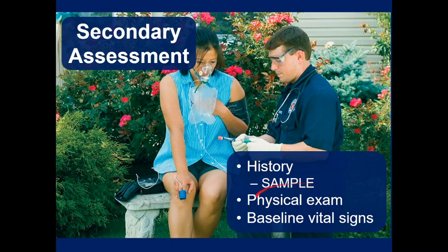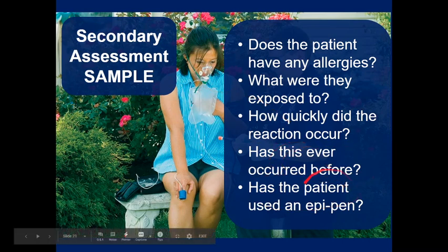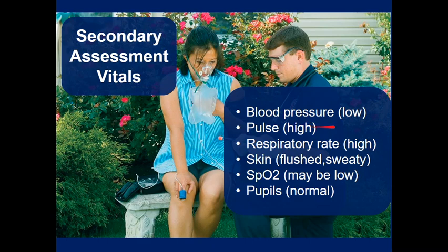For secondary assessment, expose the patient — some people may only have hives on their trunk, so lift up their shirt and look all over. Always do a SAMPLE history and get vitals. Secondary questions: Do they have drug, seasonal, or food allergies? Do you know what they were exposed to? How quickly did the reaction occur? Has it happened before? Did they need a hospital, an EpiPen, an ICU stay, or a surgical airway? Suggestive vital signs include hypotension, tachycardia, tachypnea, flushed sweaty skin — that's distributive shock. They may be hypoxic. Pupils will be normal.